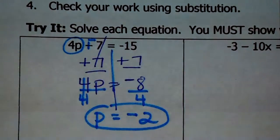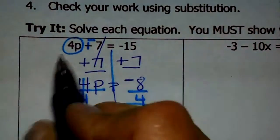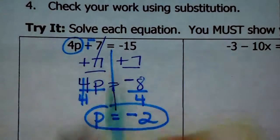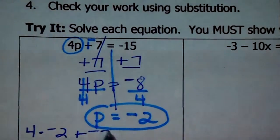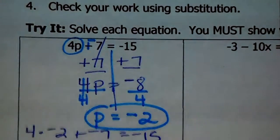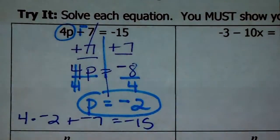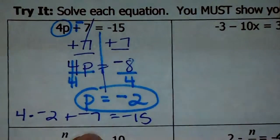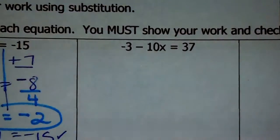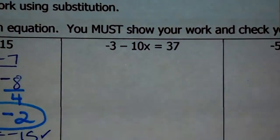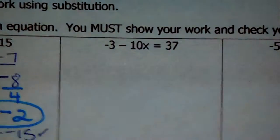To check that you're right, you just plug it back in. So if p is negative 2, then 4 times negative 2 plus negative 7 should give me negative 15. 4 times negative 2 is negative 8. Negative 8 plus negative 7 is negative 15. So I know that I'm right.